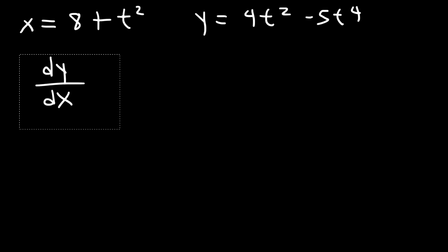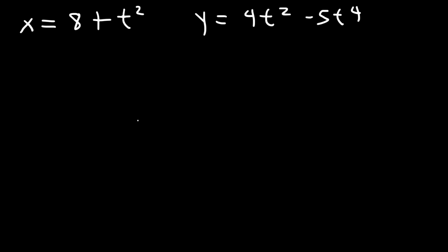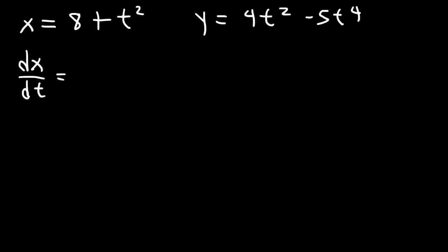The first thing we need to do is find dx/dt and dy/dt. So dx/dt is going to be the derivative of 8 plus t squared with respect to t. The derivative of 8, that's a constant, that's going to be 0. And the derivative of t squared, using the power rule, is 2t to the first power, or simply 2t.